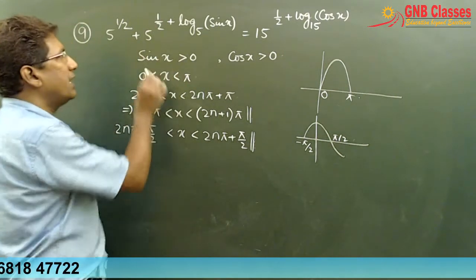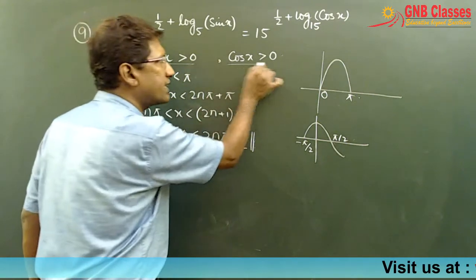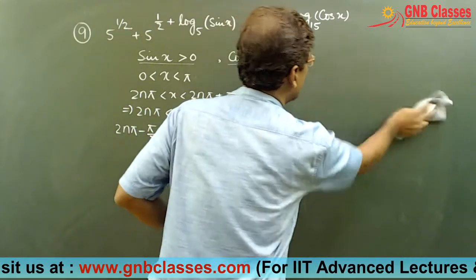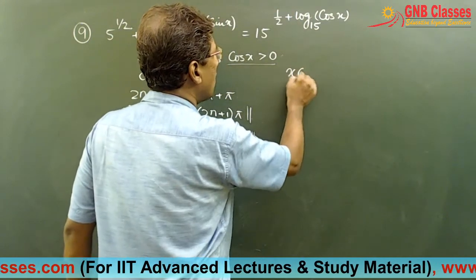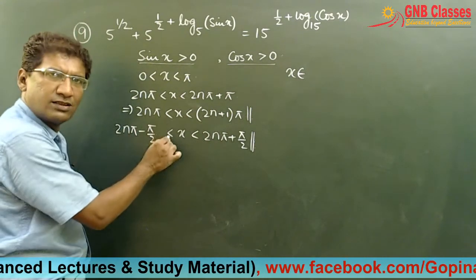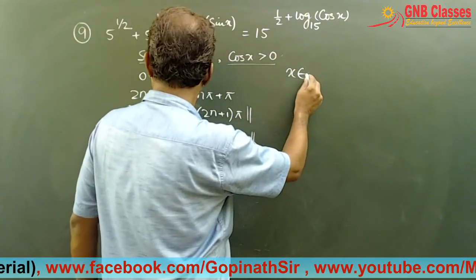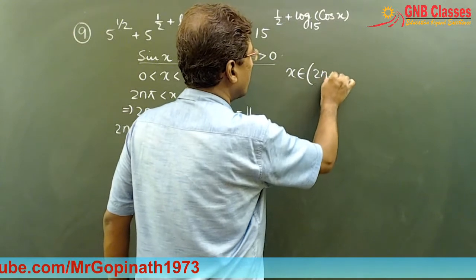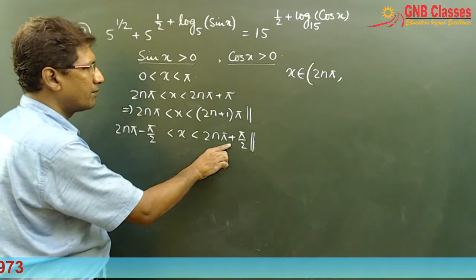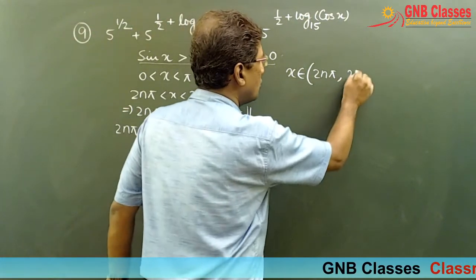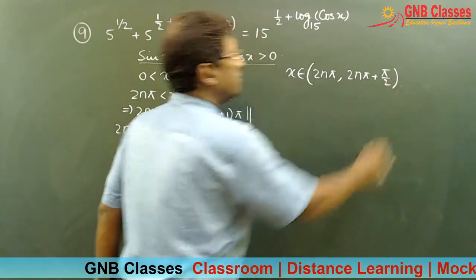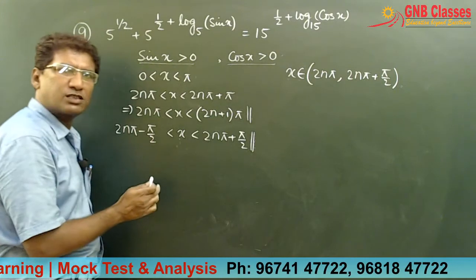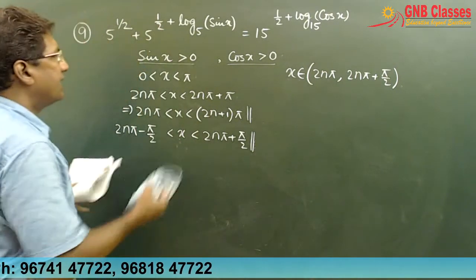For this equation to be valid, sin x has to be greater than zero as well as cos x has to be greater than zero. Therefore x has to belong to the common region of both intervals. Combining the two inequalities, we get x must lie between 2nπ and 2nπ plus π/2 to define this equation.